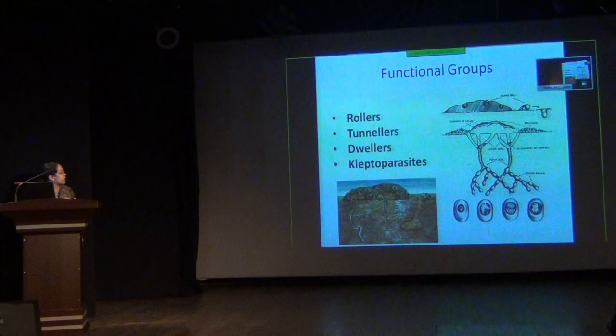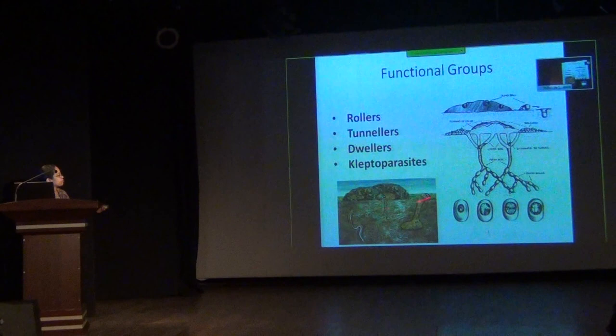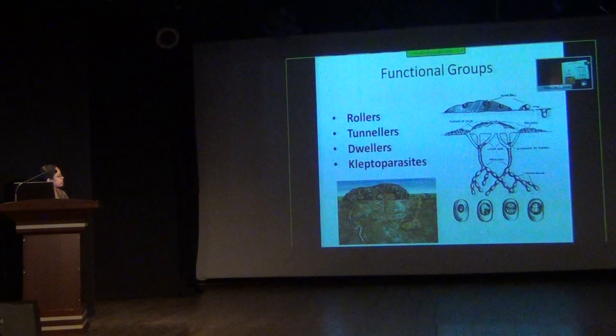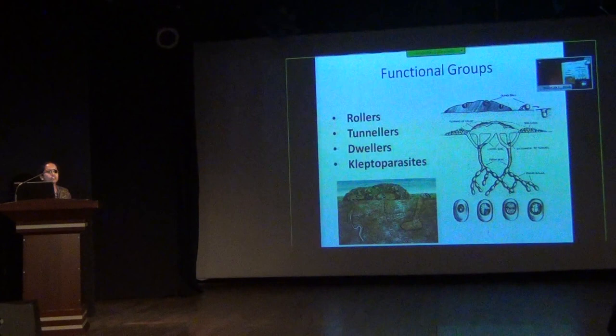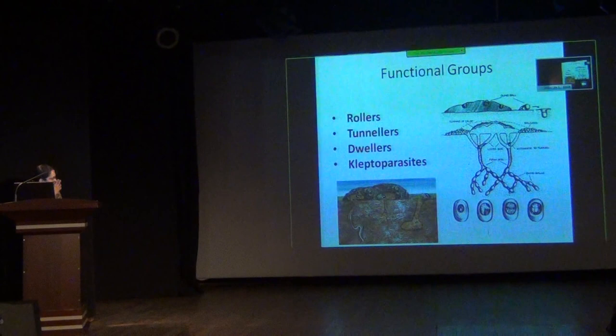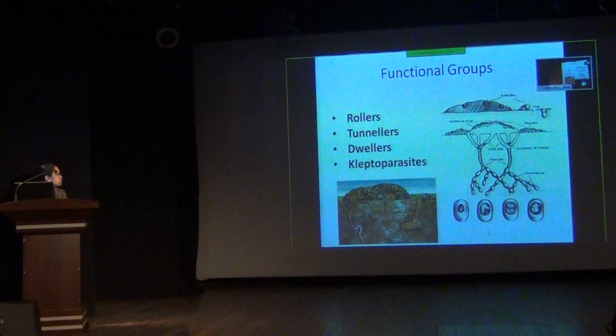Tunnelers will tunnel just under the dung. Rollers take away the dung from the dung pat, carry it some meters away, and bury it under the soil, while tunnelers bury it just under the dung. Dwellers stay in the dung and nest inside it. They carry away the dung not only for feeding but also for nesting — inside the tunnels they make brood balls, and in each brood ball they lay their eggs.